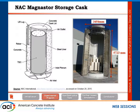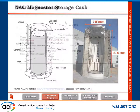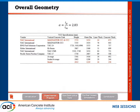This is the demo cask built by NAC for demonstration purposes — they opened it up so you can see the concrete, the rebar, the steel liner, the base plate, and the air vents. We looked at different concrete vertical casks from different manufacturers, examining key dimensions such as height, outside diameter, liner thickness, and concrete thickness. These dimensions are quite close to each other across vendors. Our scaling factor was approximately 2.8.